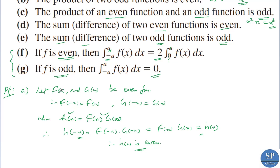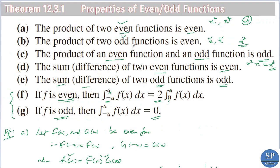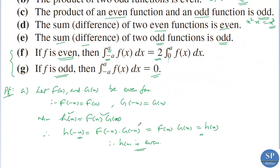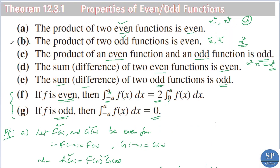In a similar way we can prove the second property: if two functions are odd, then their product is an even function. If f(x) and g(x) are odd, then f(-x) = -f(x) and g(-x) = -g(x). So h(-x) = (-f(x))·(-g(x)) = f(x)·g(x) = h(x), which is even. You can try proving the other properties by yourself.